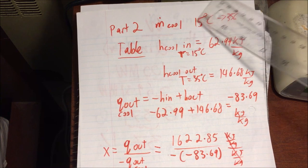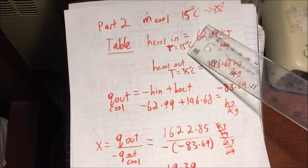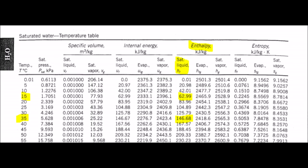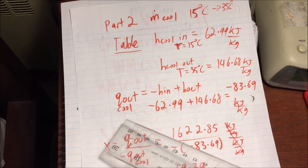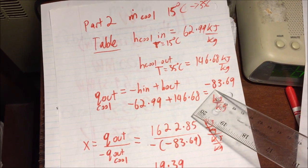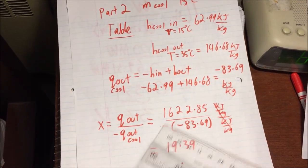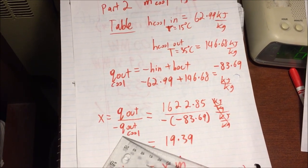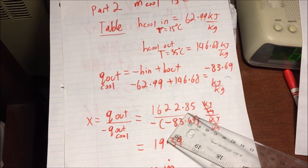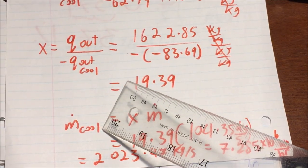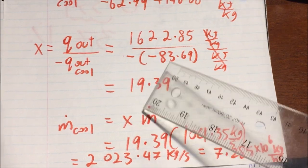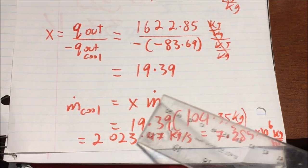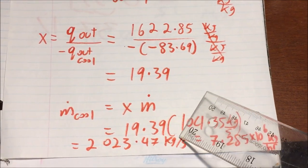To solve the mass flow rate of the cooling system, we look at the table for saturated liquid at temperatures 15 degrees Celsius and 35 degrees Celsius. Next, we solve the heat out of the cooling system, which is negative 83.69 kilojoules per kilogram. The ratio of Q out of the Rankine cycle to Q out of the cooling system gives 19.39. Finally, the mass flow rate of the cooling system is that ratio times the mass flow rate of the Rankine cycle, giving 2023.47 kilograms per second.